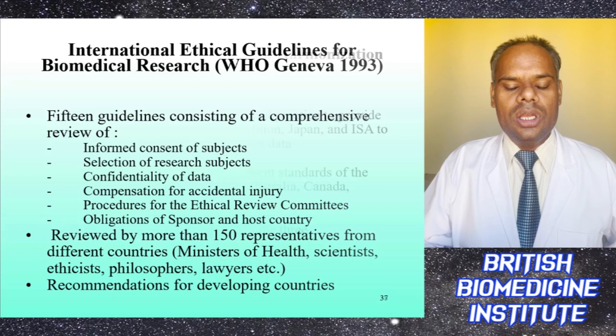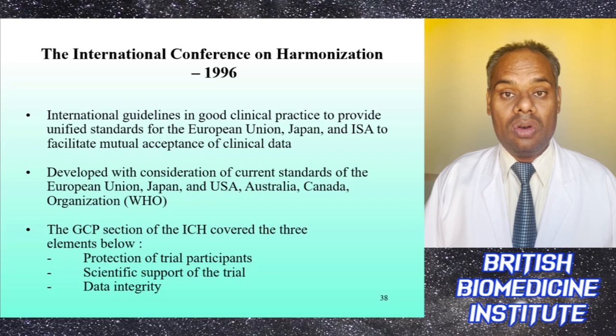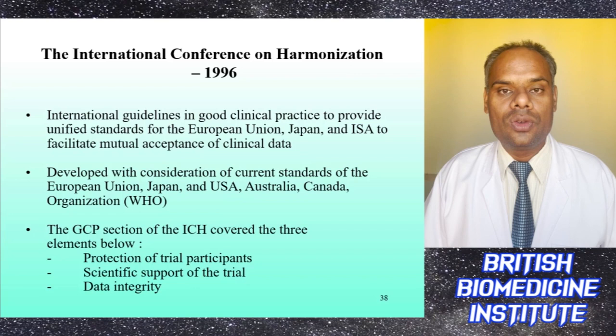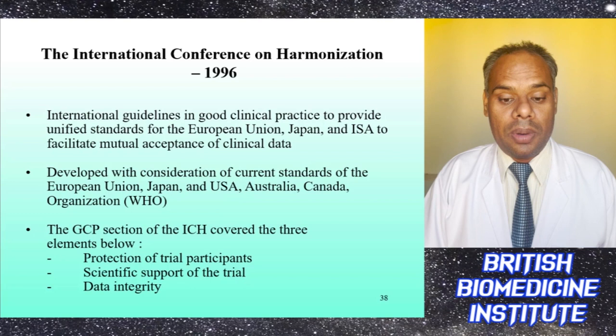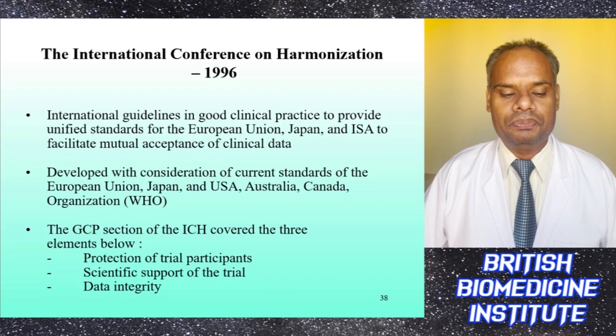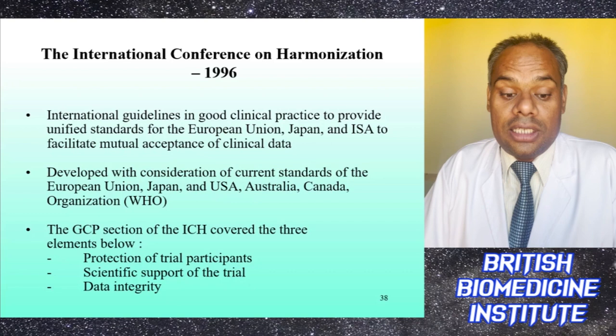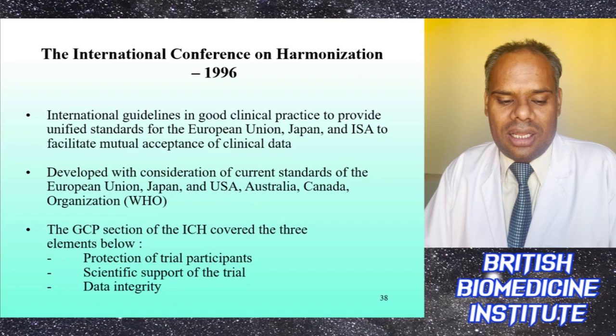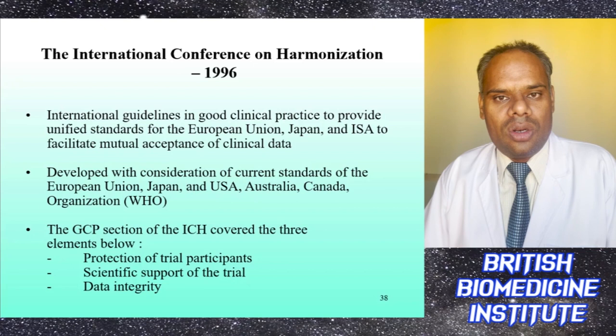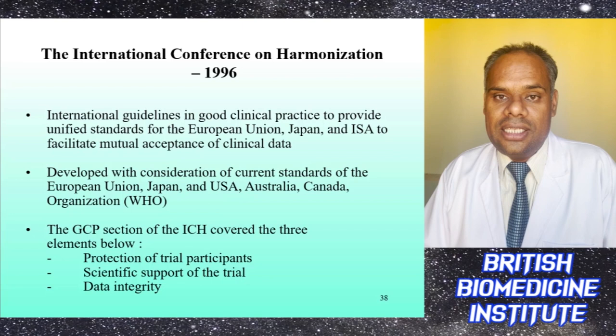In 1996, the International Conference on Harmonization (ICH) established international guidelines for Good Clinical Practice (GCP) to provide a unified standard for the European Union, Japan, and the USA, facilitating mutual acceptance of clinical data. Developed with consideration of standards from the EU, Japan, USA, Australia, Canada, and WHO, the GCP section of ICH covered three main elements: protection of trial subjects, scientific support of the trial, and data integrity.